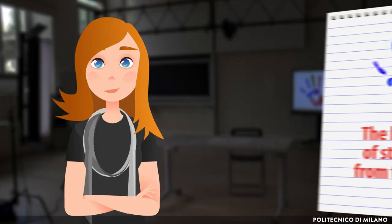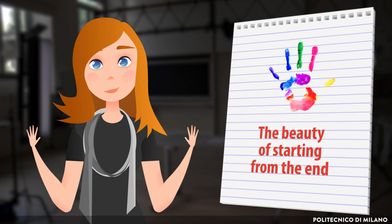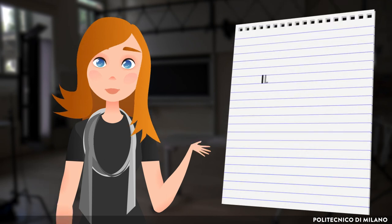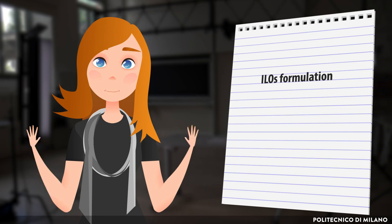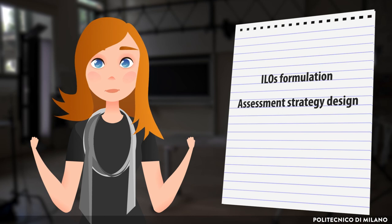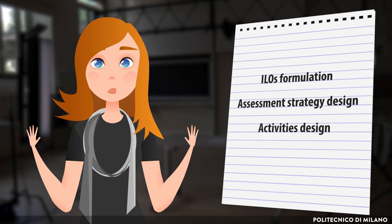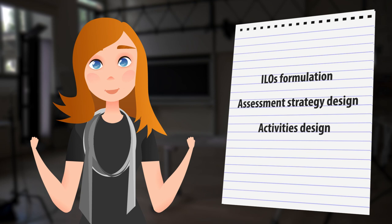Now, let's recap what's useful for us from Biggs' approach. A teaching and learning design experience can take its first steps from an accurate formulation of the intended learning outcomes. Afterwards, it can focus on designing the assessment strategies that allow teachers to observe if the intended learning outcomes have been met. Finally, only at this point, it can explore the teaching and learning activities necessary to support students in achieving the intended learning outcomes and positively overcoming the assessment tests.